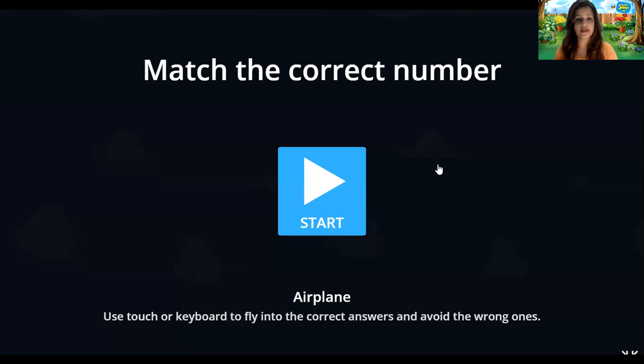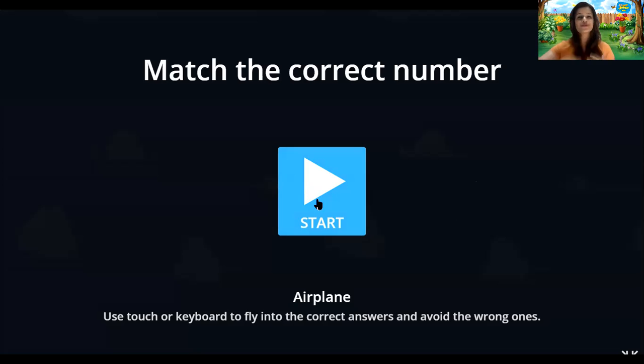So this was a rhythmic number recitation and we recited numbers from 0 to 50. And now children, it's time to play a game together. So let us see what the game is — Match the correct number. Use touch or keyboard to fly into the correct answers and avoid the wrong ones. So let us just try playing this game together.